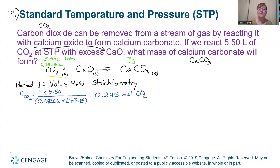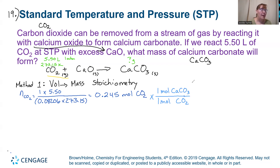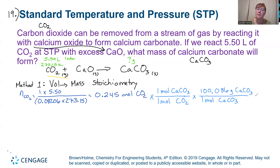Step two in volume-to-mass stoichiometry: apply stoichiometry to our moles. The mole ratio is 1 mole CO2 to 1 mole CaCO3. Then we use the molar mass of CaCO3, which is 100.086 grams per mole. That gives a final answer by method one of 24.5 grams of calcium carbonate.